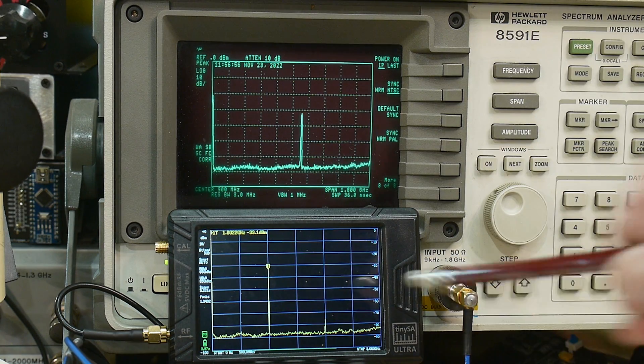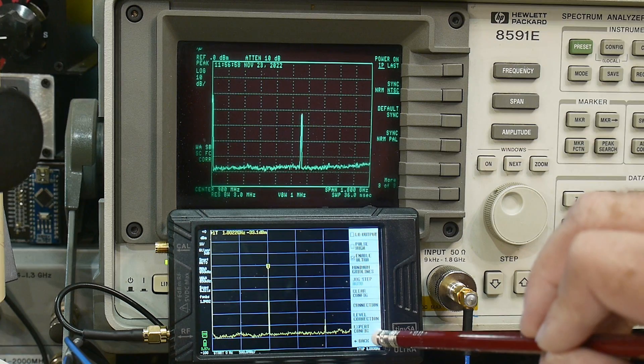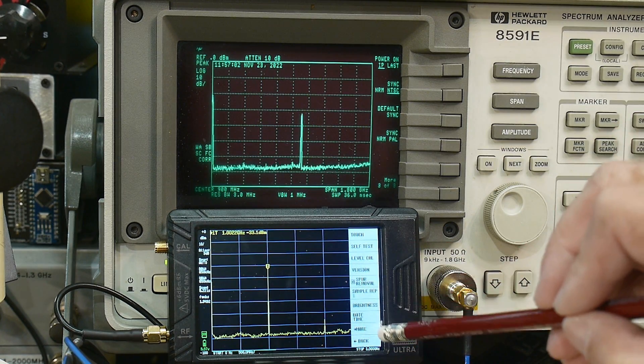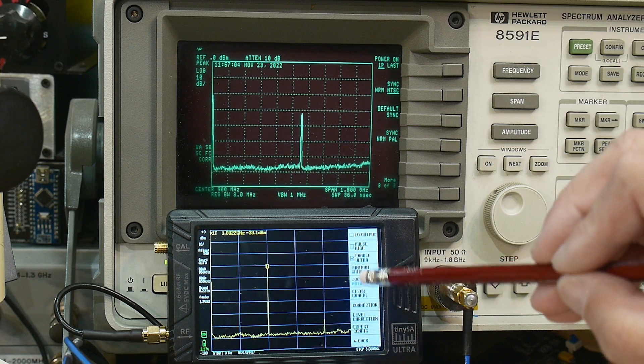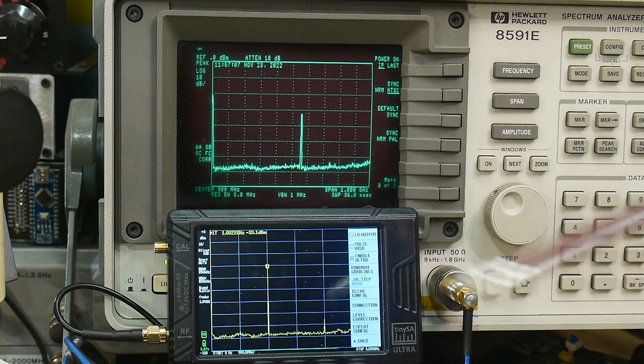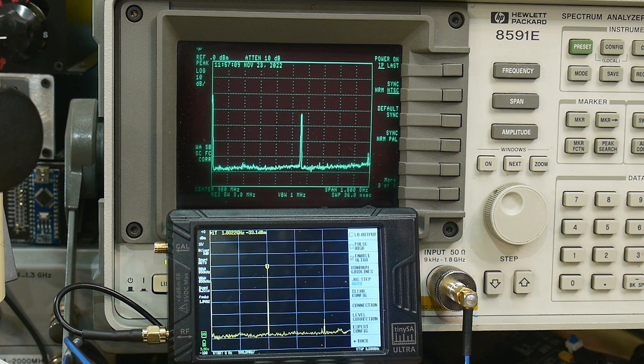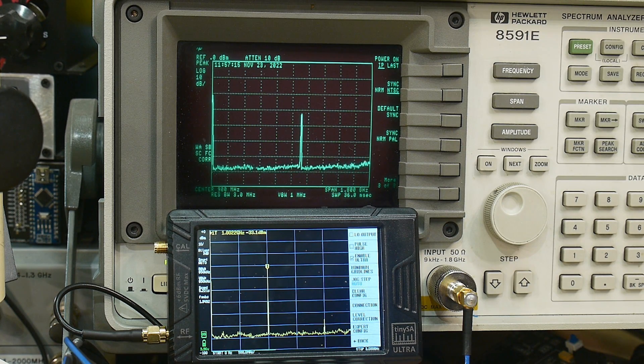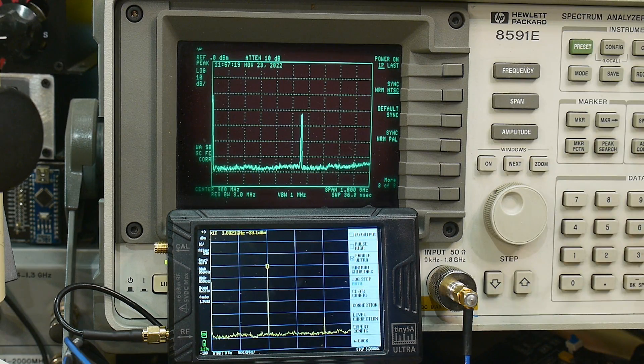The Ultra mode can be found in the Configuration menu. Go to More, and then there's a thing here called Enable Ultra. When you click on Enable Ultra, it will ask you for a passcode. The passcode is on the wiki page of the TinySA, and the passcode is 4321.